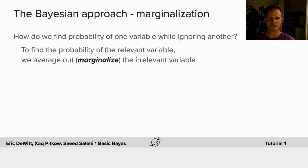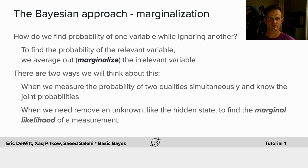There are two ways we can think about this: when we measure the probability of two qualities simultaneously and we know their joint probabilities, or when we need to remove an unknown, like the hidden state, to find the marginal likelihood of a measurement.